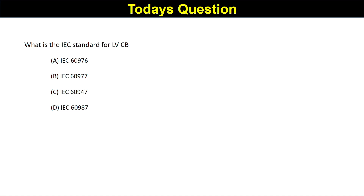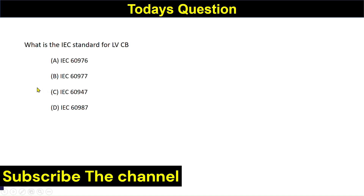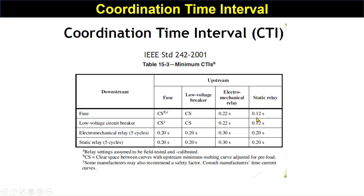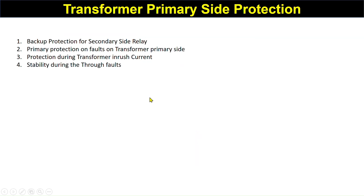Now, we should know about the coordination time interval between relays. There are two types: static relay and electromechanical relay. As per IEC / IEEE Std 242-2001, if both downstream and upstream devices are static relays, the coordination time interval should be 0.2 seconds. Transformer primary protection should provide backup protection for the secondary side relay, primary protection for faults on the transformer primary side, protection during inrush currents, and stability during through faults.